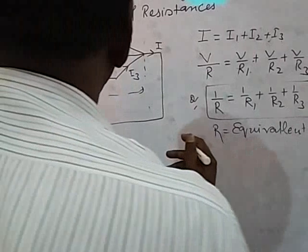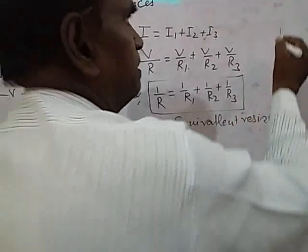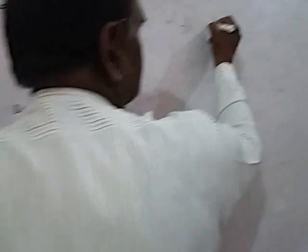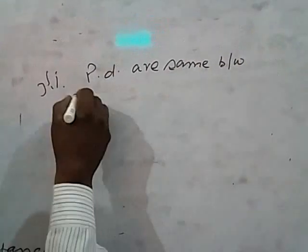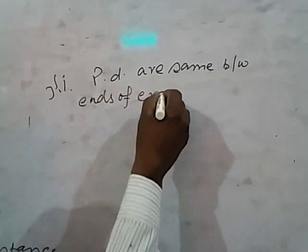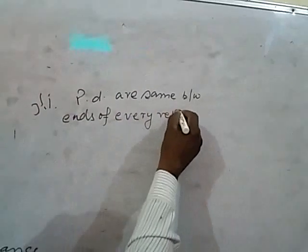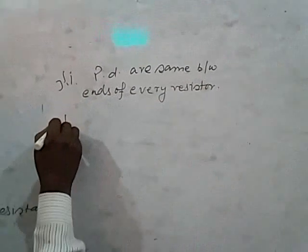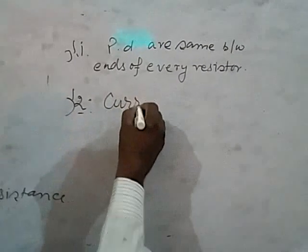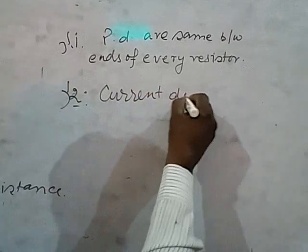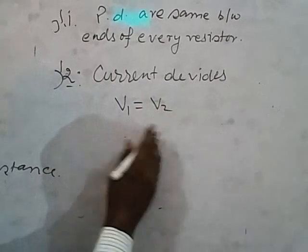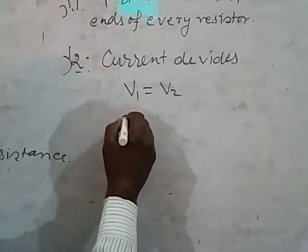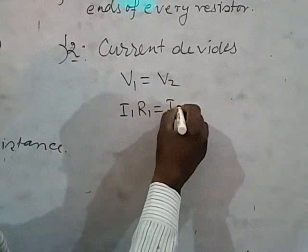In this we said that current divides. Potential difference are same between ends of every resistor. Second thing, current divides. Potential difference if same, then V1 equal V2. V1 equals I1 R1 equals I2 R2. So I1 by I2 equals R2 by R1.